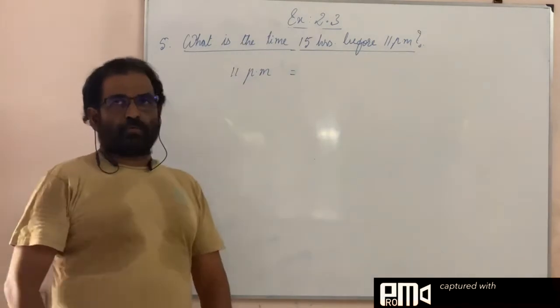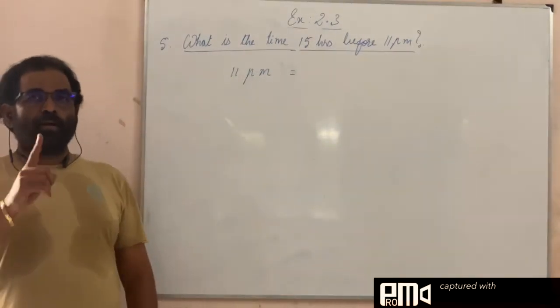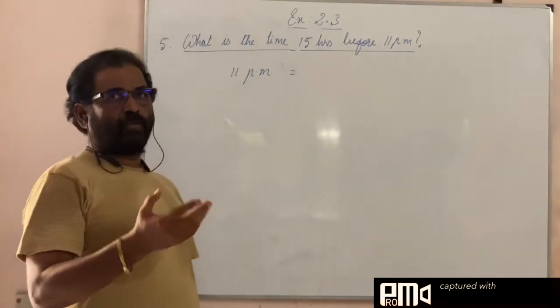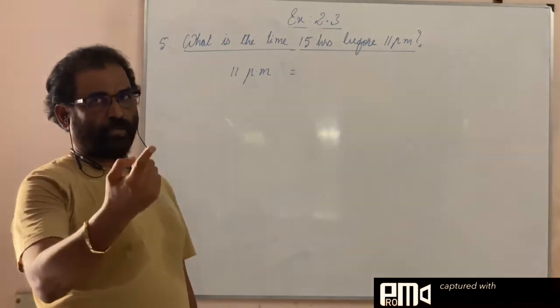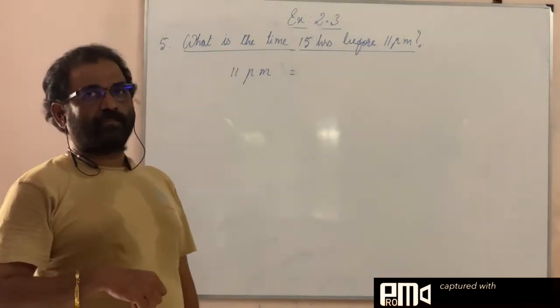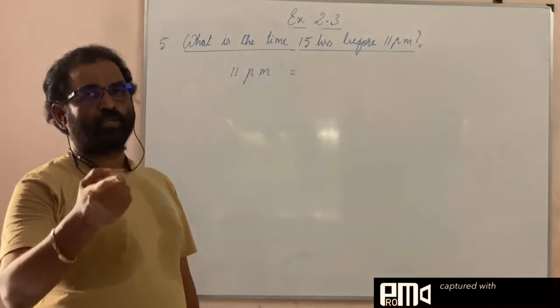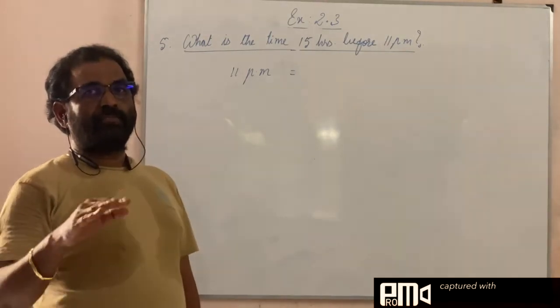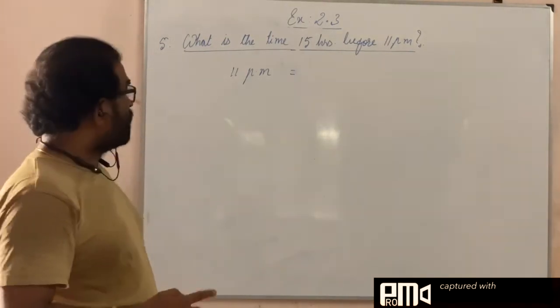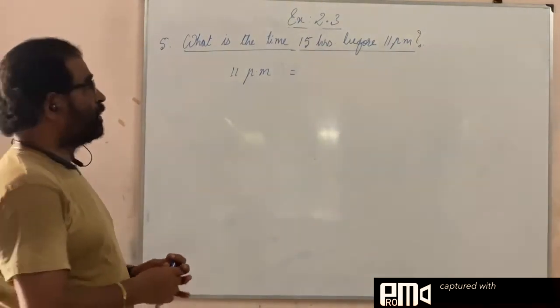After 12 noon, 1 p.m. means 13 hours—that's 1 plus 12. 2 p.m. means 14 hours, 2 plus 12. 3 p.m. means 15 hours, 3 plus 12. So like that, 11 p.m. means 11 plus 12, which equals 23 hours.